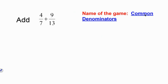So here I have 4 sevenths plus 9 thirteenths, and I am going to simplify. The main thing I need to get is common denominators. The easiest way would be to multiply by the other denominator. So here in the first fraction, I have 4 sevenths, and in order to make this denominator the same, I would need to multiply by 13 — because 13 is a prime number. What I'm going to do is multiply the top and bottom by 13. Now you could be thinking, whoa — isn't this breaking the math rules?